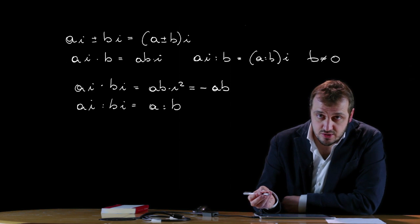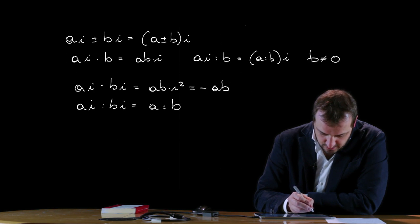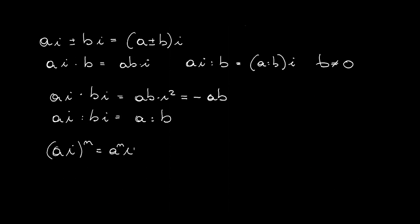Another operation possible with imaginary numbers is raising an imaginary number to a power. So (Ai)^N equals A^N × i^N, applying the usual properties of exponents. Let's open a brief parenthesis to look at the sequence of i^N — for example, computing i^0, i^1, i^2, i^3, i^4, i^5, i^6, and so on.